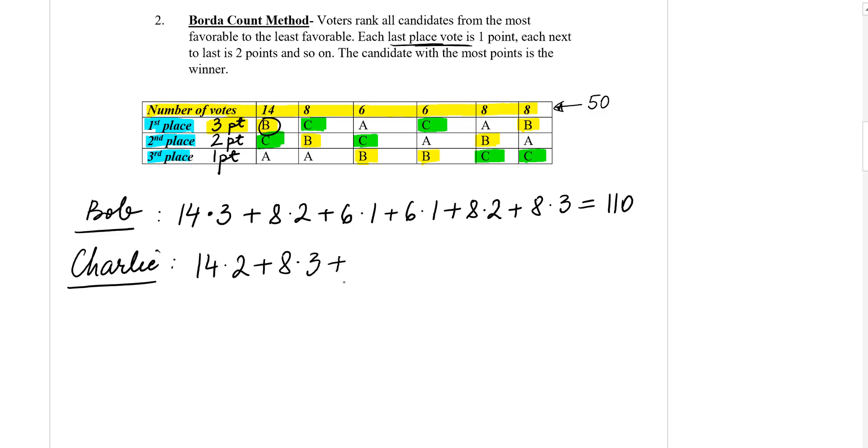Plus Charlie has six votes on second place. Then it's on first place with six votes, so six votes, three points, plus eight votes on third place, which is equivalent of one point, and then eight votes of one point again. And the total is 98.